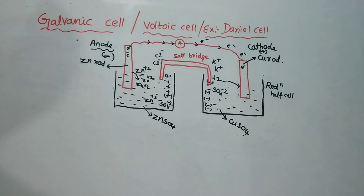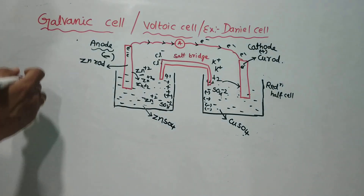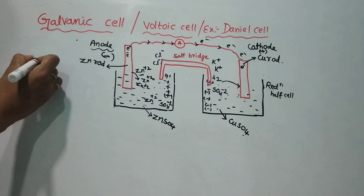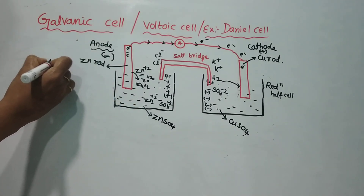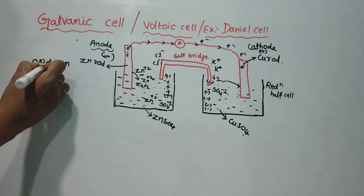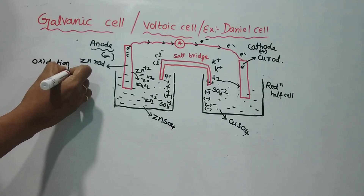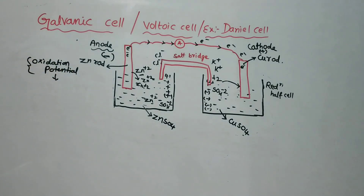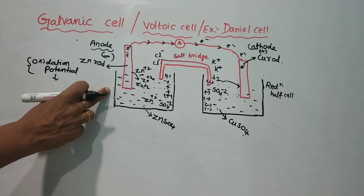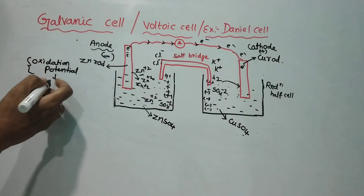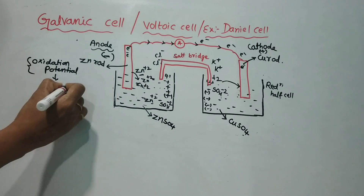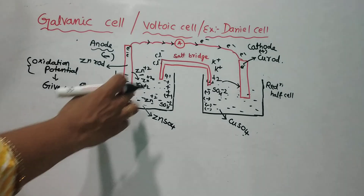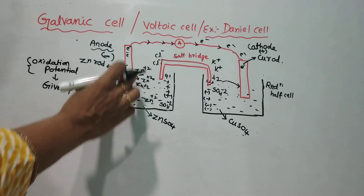Here we have the electrode potential. There are two types: oxidation potential and reduction potential. Oxidation potential is the ability of an electrode to give up electrons and become oxidized.